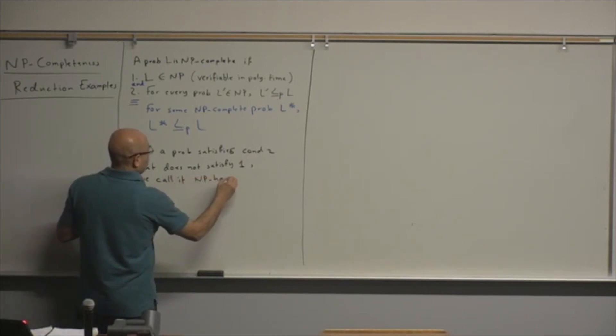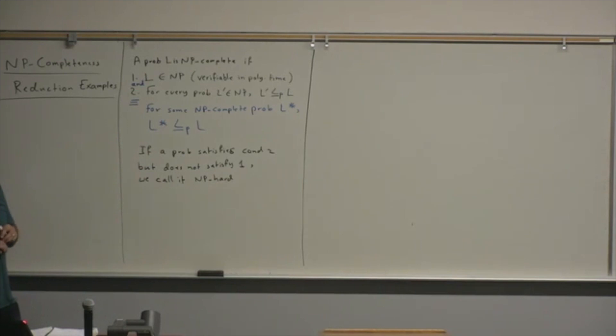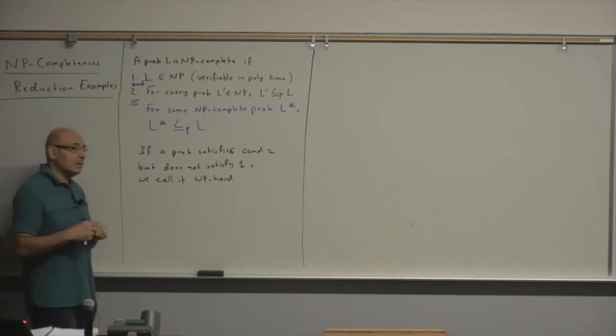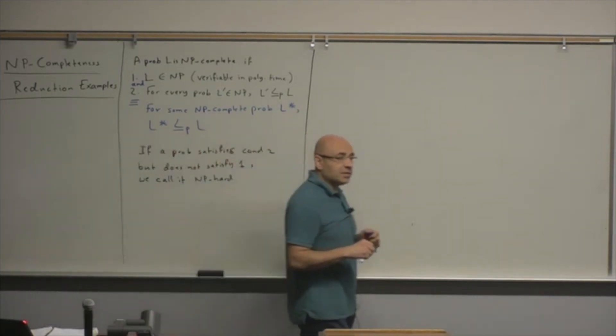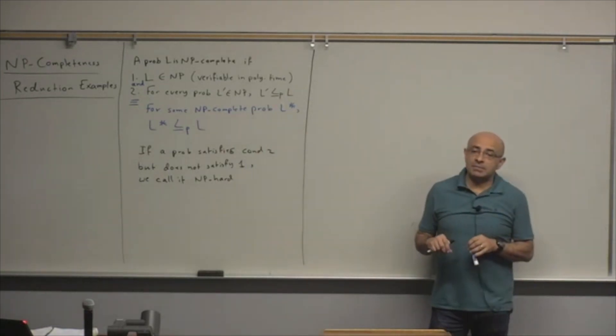And the example that we gave last time was, what was the example for an NP-complete and an NP-hard problem? The optimization version of the traveling salesman problem is NP-hard because the optimization version does not belong to NP. And why doesn't the optimization version belong to NP?